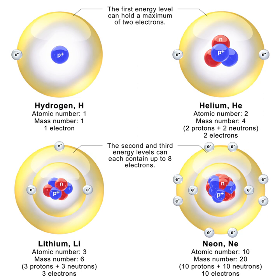High-energy neutrons have much more energy than fission energy neutrons and are generated as secondary particles by particle accelerators or in the atmosphere from cosmic rays. These high-energy neutrons are extremely efficient at ionization and far more likely to cause cell death than X-rays or protons.